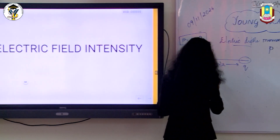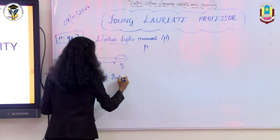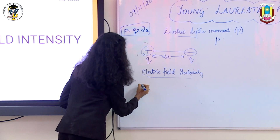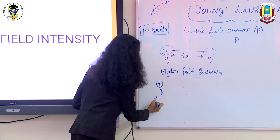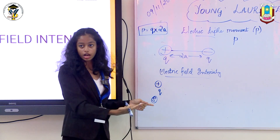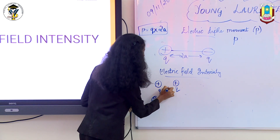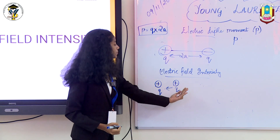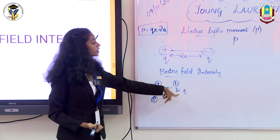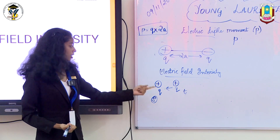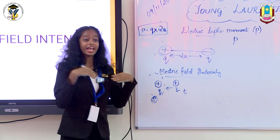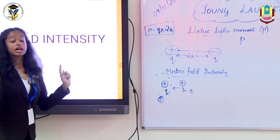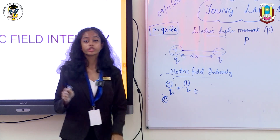Now let's move to electric field. What is electric field? Suppose we have a source charge — a positive charge q. If we bring a test charge, another positive charge, next to this source charge, that test charge will experience an electrostatic force. The region around the source charge due to which any other charge particle brought next to it experiences a force is called the electric field.